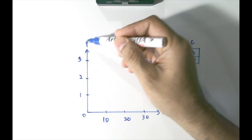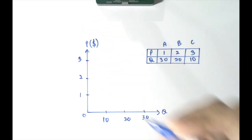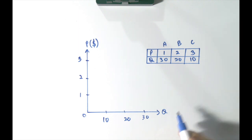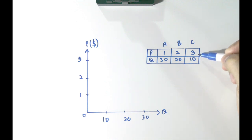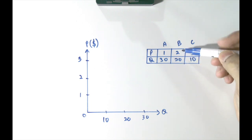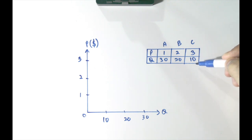Next, we will look into the demand curve. On the y-axis, we have the price — let's put a dollar sign over here. And on the x-axis, we have quantity. So let's plot the demand curve based on this table here, where you can see when price is 1, quantity demanded is 30. When price is 2, quantity demanded is 20. And when price is 3, quantity demanded is 10.